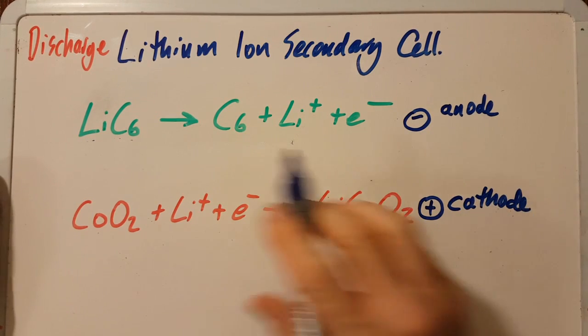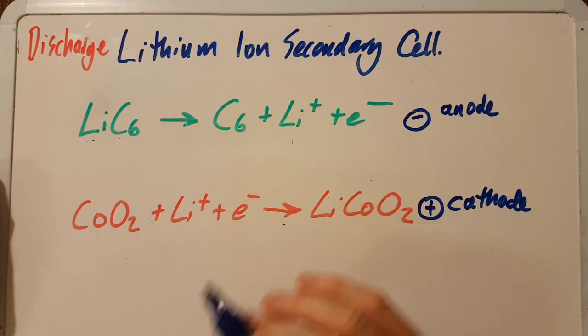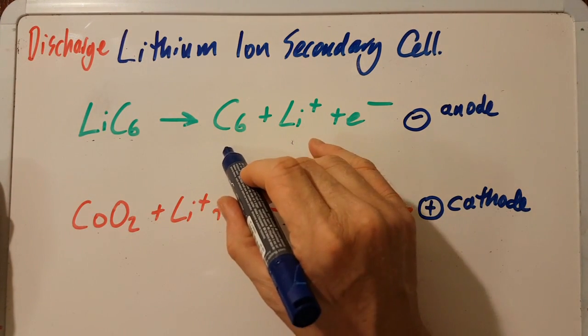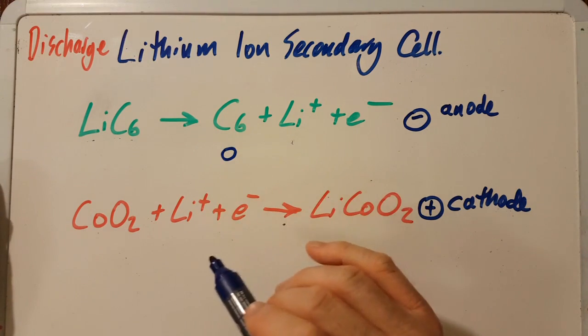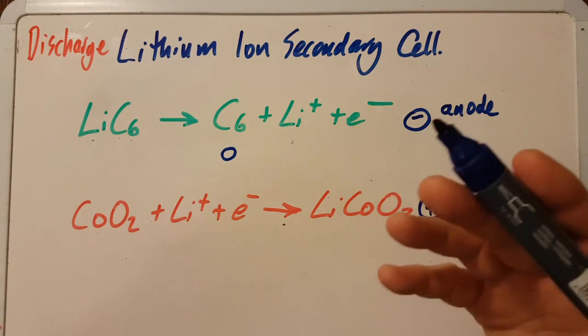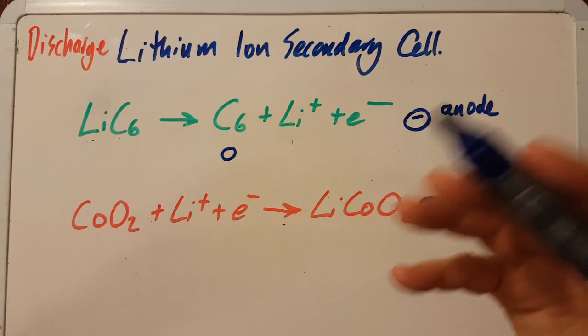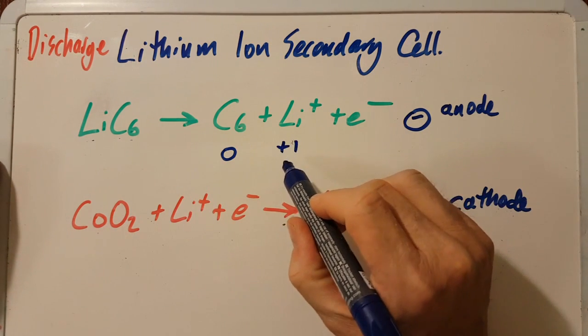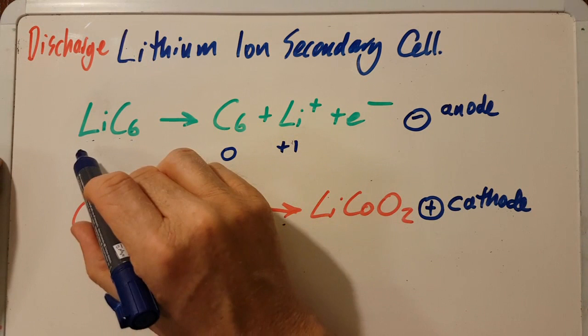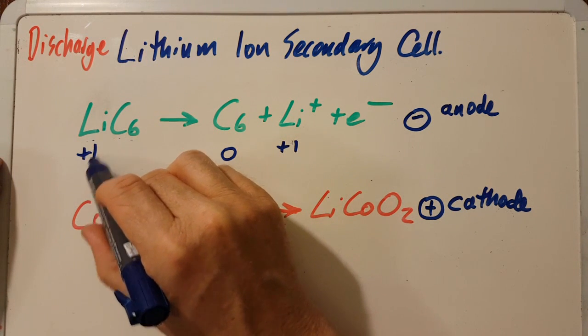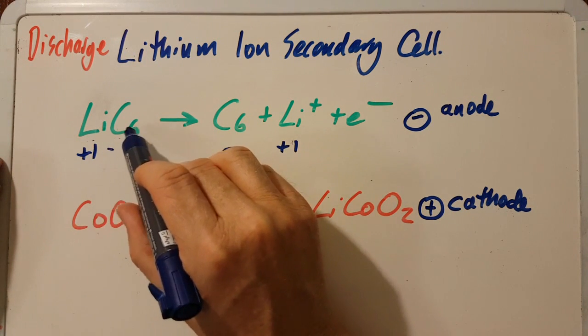Leaving this as the cathode. Now these two look a little bit funky. All elements are zero, that C6 is graphite, and remember you don't have to memorize these equations, just be familiar with them. Lithium's plus one - this is lithium in a compound, group one which is plus one.